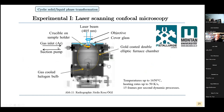We did the experiments with a laser confocal microscope. In the middle is a gold-coated ellipsoidal oven. In one focal point there is the halogen bulb, and here is the specimen, which is heated very locally. The big advantage of this device is that you can go up to 1650 degrees Celsius and achieve heating rates of up to 50 K per second, and observe dynamic processes at 50 frames per second — for example, observing martensitic needles growing in situ.